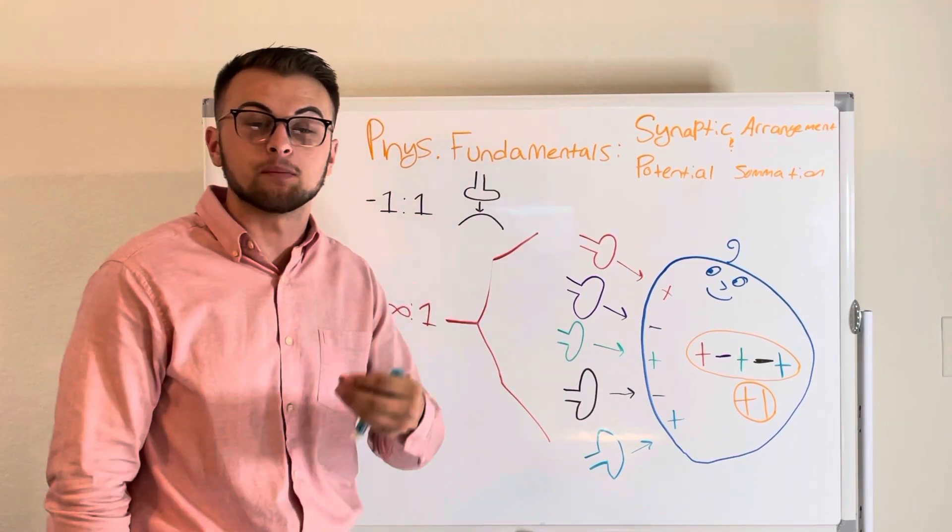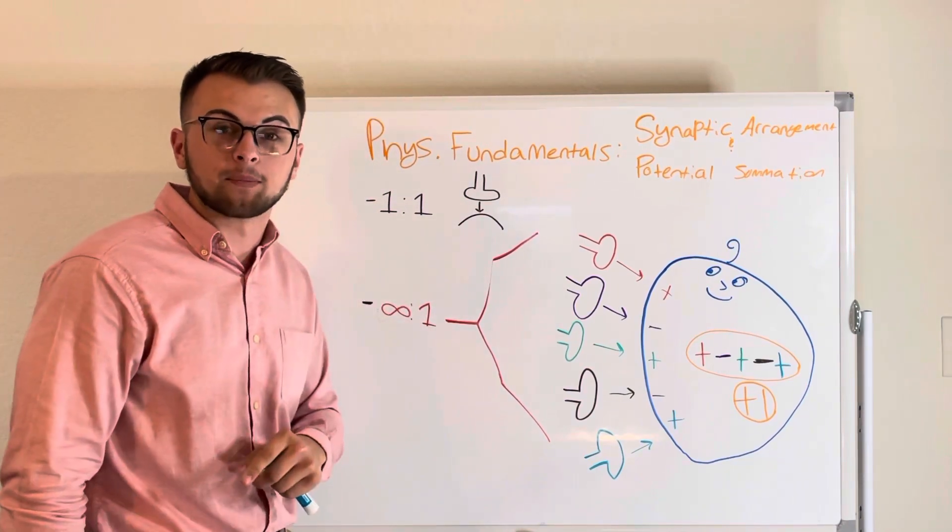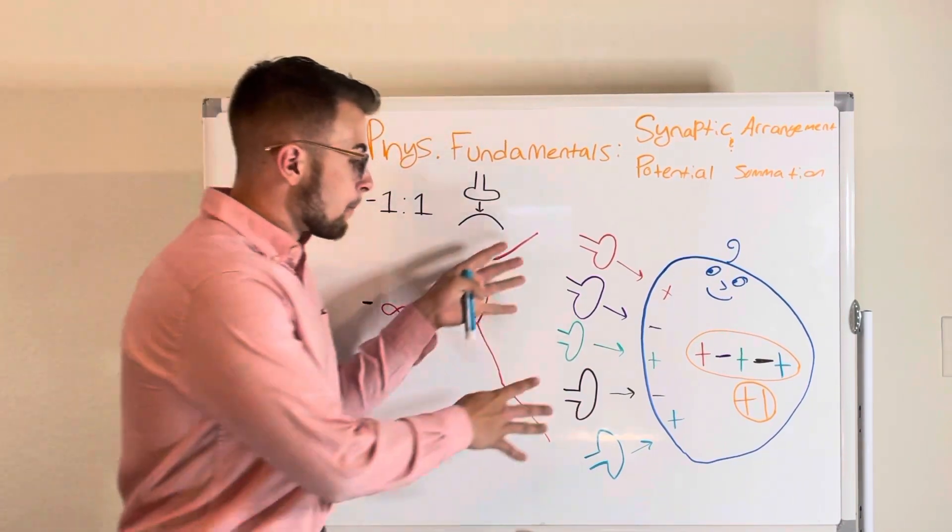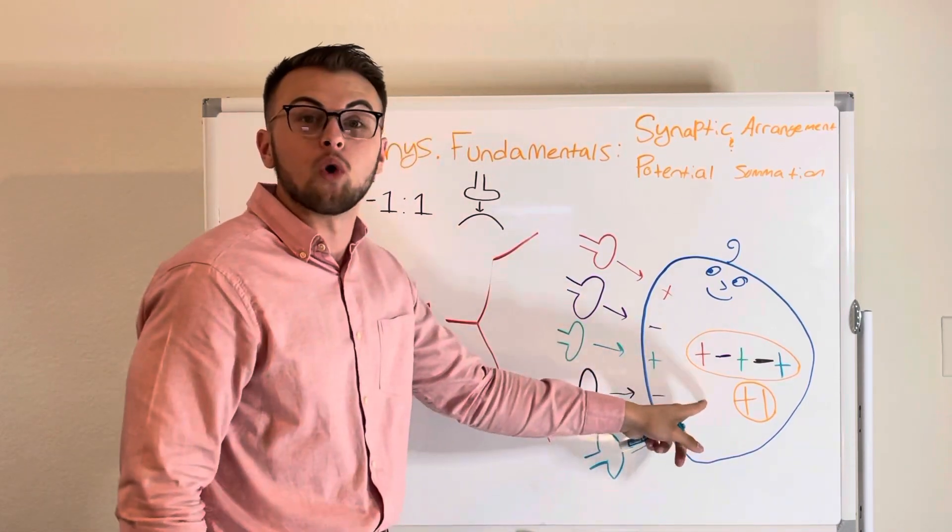Another way our cells can be connected is the many-to-one arrangement. This is where many cells send chemical messages to influence one cell.